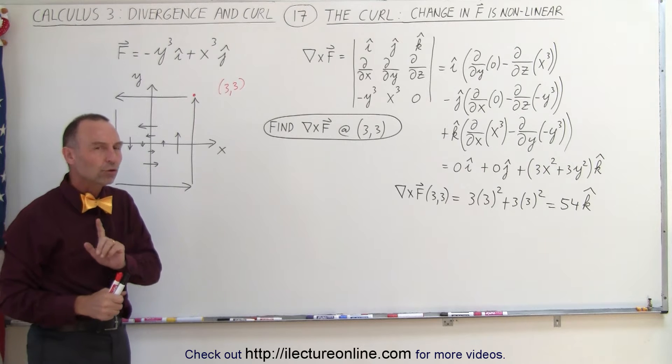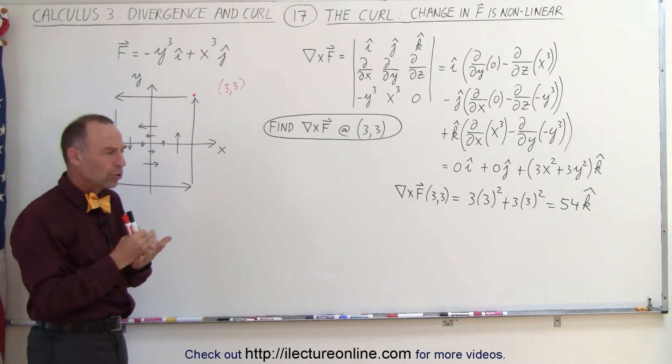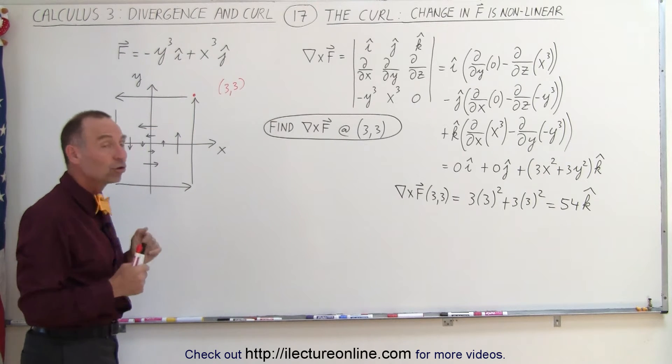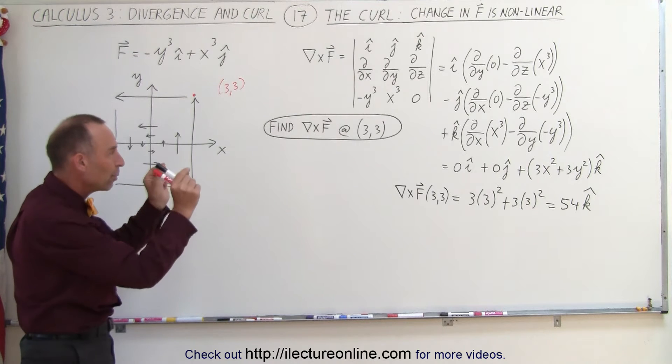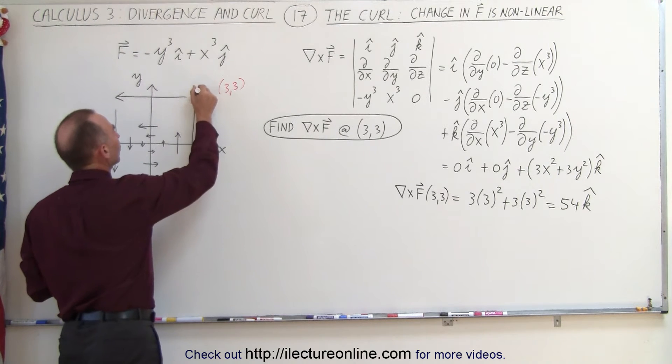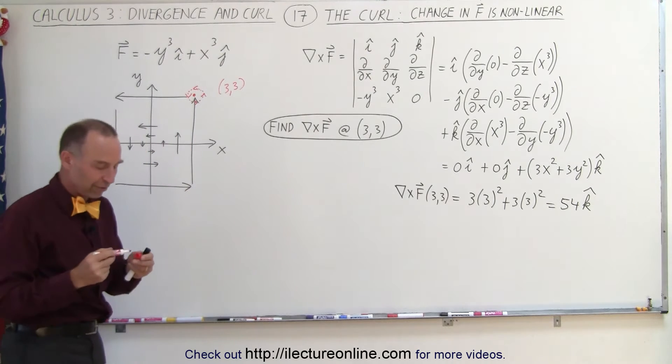Now we can also use the method we used before, but remember, that method we only used when we had a linear change in the vector field. This is, of course, not a linear change, but you can see how when we make the change very small, when we make the path of the circulation very small, we should be able to come up with a reasonable value very close to the value of 54.